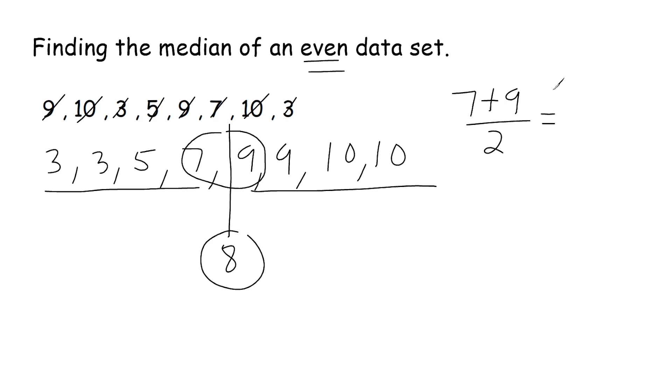So if we add seven and nine we get 16 and divide that by two we end up still getting eight. So it doesn't matter how big or small the numbers are. If you add those two numbers and divide by two that will always give you what is in the middle of those two numbers.